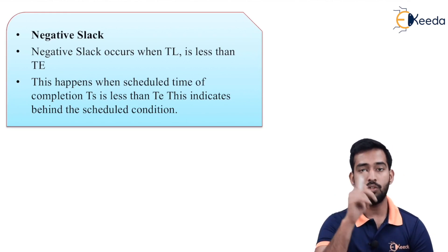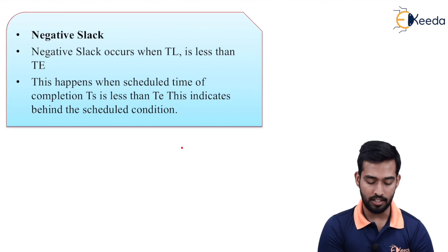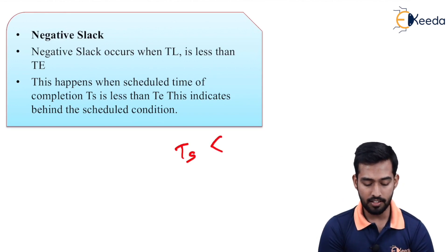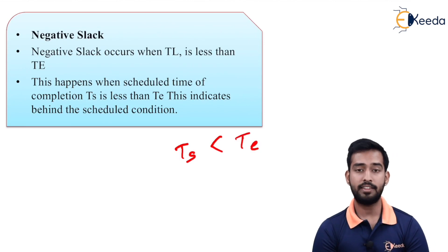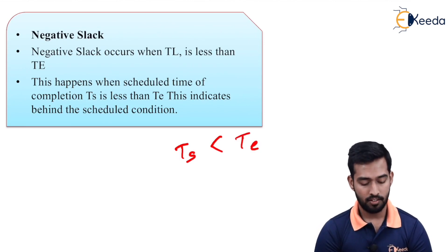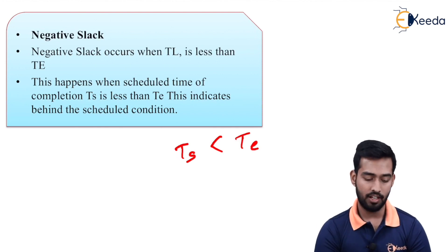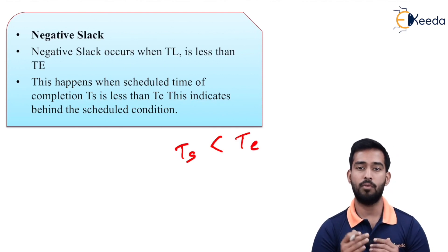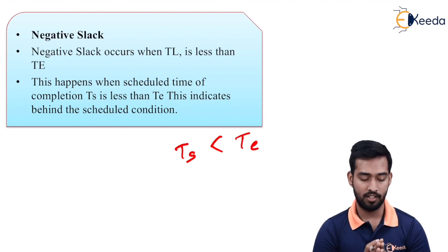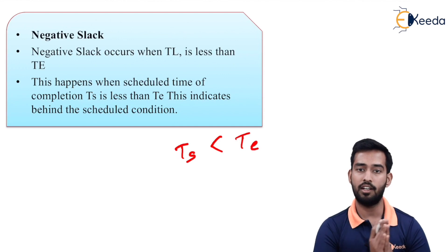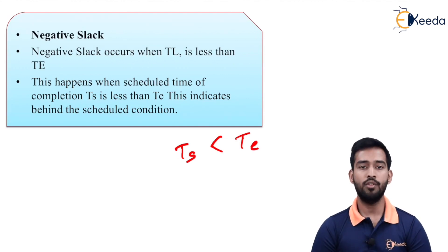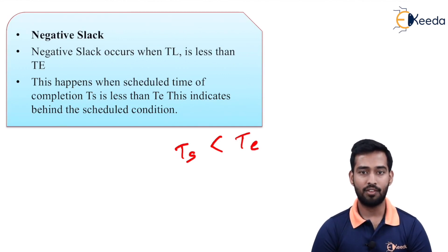Ts is the total project completion time. If Ts is less than Te, the average expected time of completion, then negative slack occurs and it indicates you are running behind schedule. Generally we aim for positive slack or zero slack. If there is negative slack it indicates we are behind our project duration. In this video we have seen what slack is and what are the types of slack — positive slack, zero slack, and negative slack.